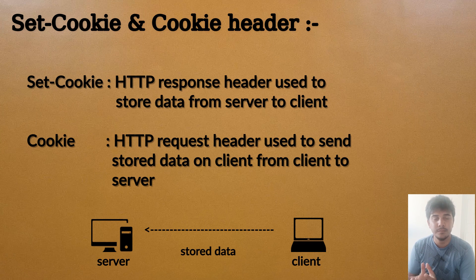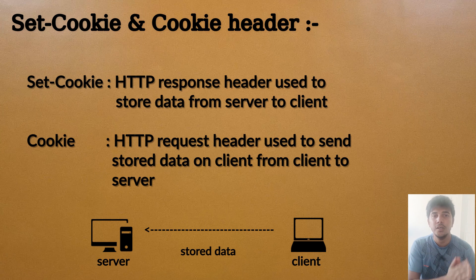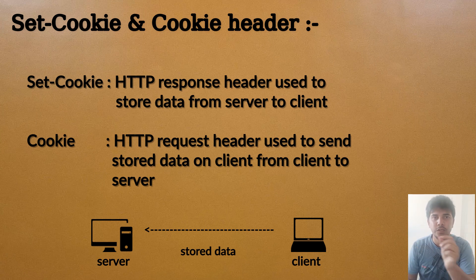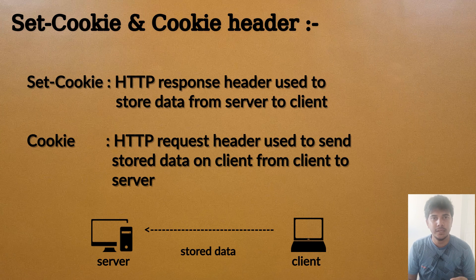The Cookie header is an HTTP request header which is used to send key-value pairs from the client machine to the server. So when the server wants to store some information to the client machine it will use the Set-Cookie header, and when the client wants to send certain information to the server it will use the Cookie header.